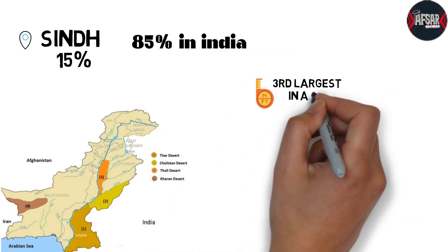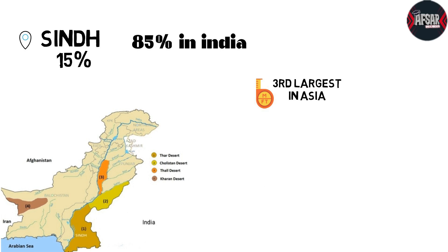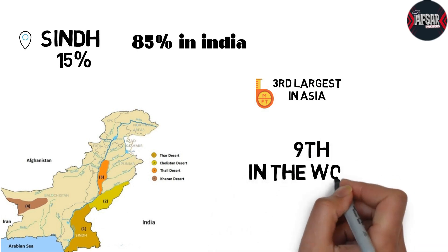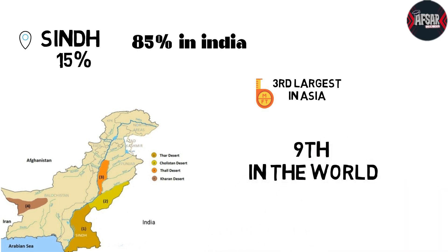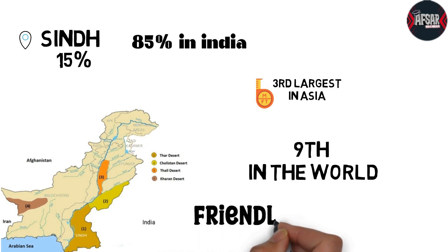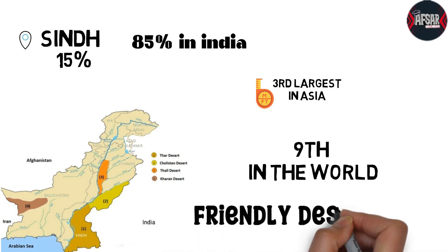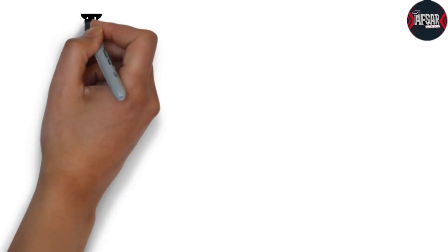Thar is the third largest desert in Asia and the ninth largest desert in the world. Another name of Thar is the friendly desert.